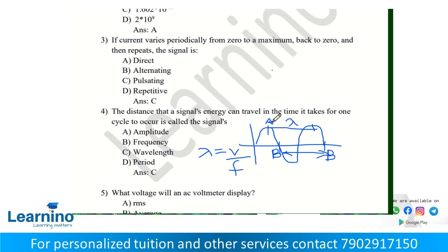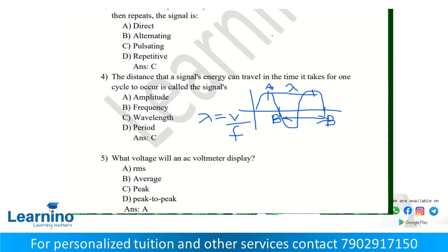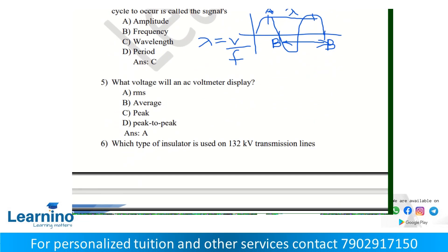What voltage will an AC voltmeter display? AC voltmeters usually display the RMS voltage. The instrument measures AC voltage, rectifies it, and the meter scale is calibrated to indicate the equivalent RMS value. The answer is A.